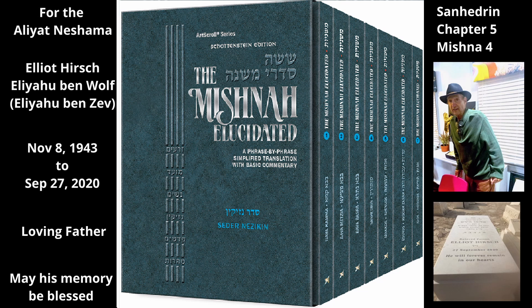The Mishnah teaches who may make arguments in favor of the defendant and who may make arguments against him. If one of the witnesses said, 'I have a reason to acquit him,' or if one of the students who sit before the judges said, 'I have a reason to convict him,' the court silences him. A witness may not join the discussion at all — either on the side of acquittal or conviction — and a student may argue only for acquittal, not for conviction.